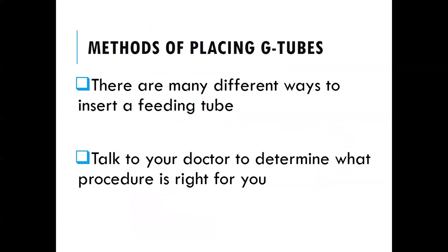There are many different ways to insert a feeding tube procedurally. At Mass General, we generally go through interventional radiology, which uses imaging to visualize where the stomach is, then makes an incision and puts the tube in from the outside into the stomach. There's also the PEG tube — percutaneous endoscopic G-tube — which uses an endoscope that goes into the mouth, placing a tube from the inside out. There are also surgical methods.